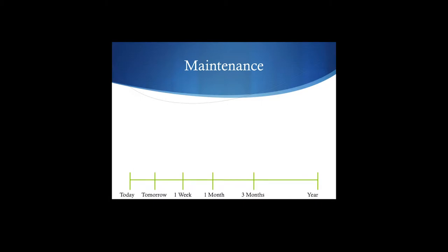Maintenance of behavior — let's not forget that as behavior managers, our job is to not be there anymore. If we have to come back, if we have to continue to teach people what to do, we haven't done our job correctly. So use natural contingencies whenever possible. We want to try and trap the behavior. You're going to train a particular behavior using contrived reinforcers, but ultimately you want that behavior to come into contact with the natural reinforcers in the real world, so that natural reinforcers will then maintain that programmed response.